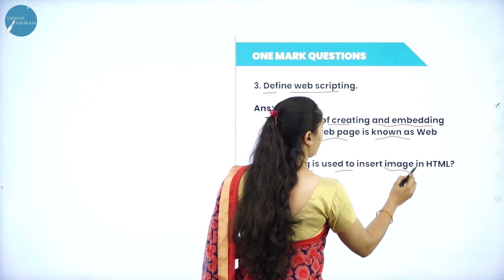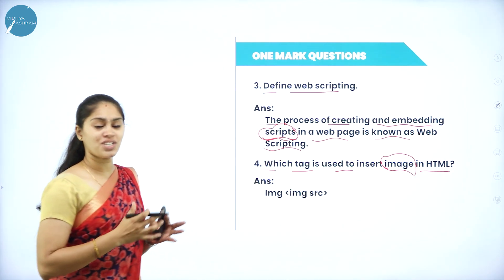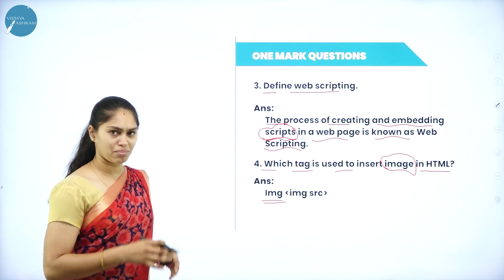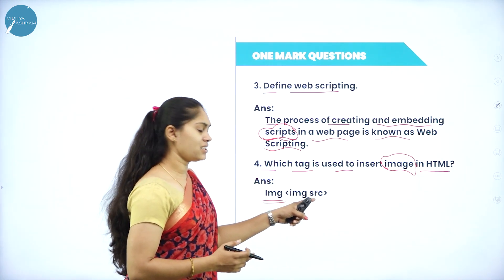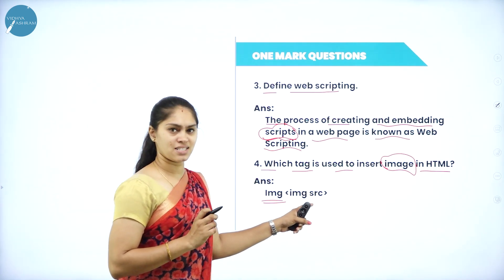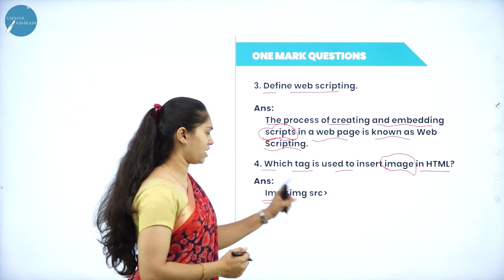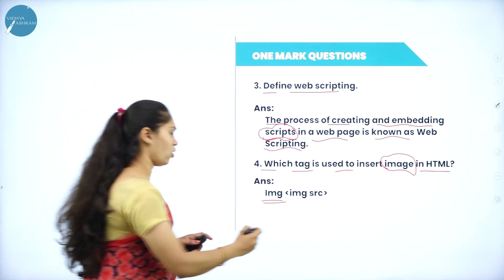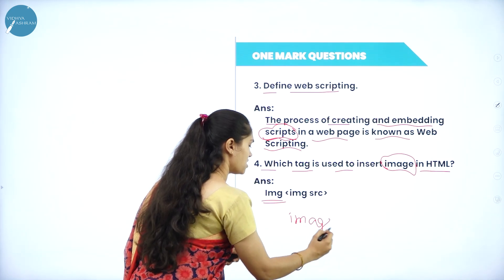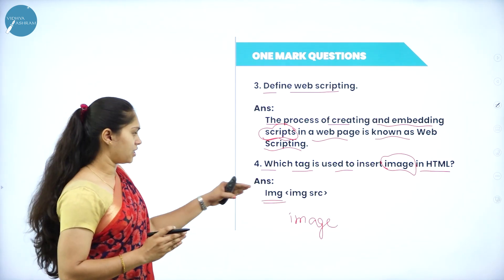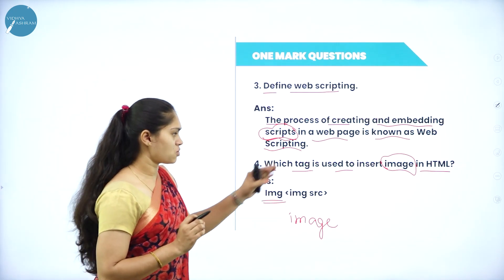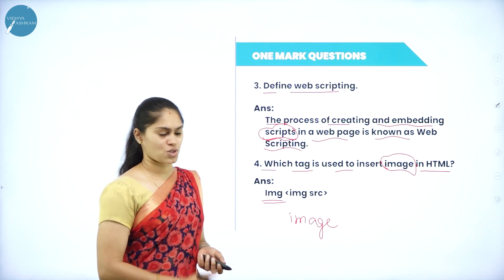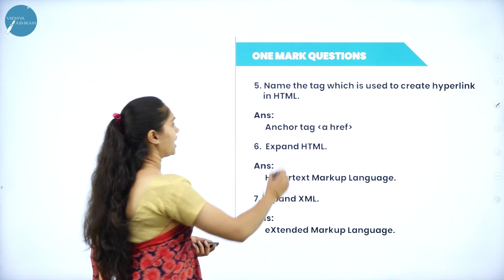Next question: which tag is used to insert an image in HTML? We use a tag called image. If I want to include an image with that image tag, I have to use an attribute called src, that is source - image source. The accurate tag name is img, which is the tag we use in order to insert an image into HTML or a web page.